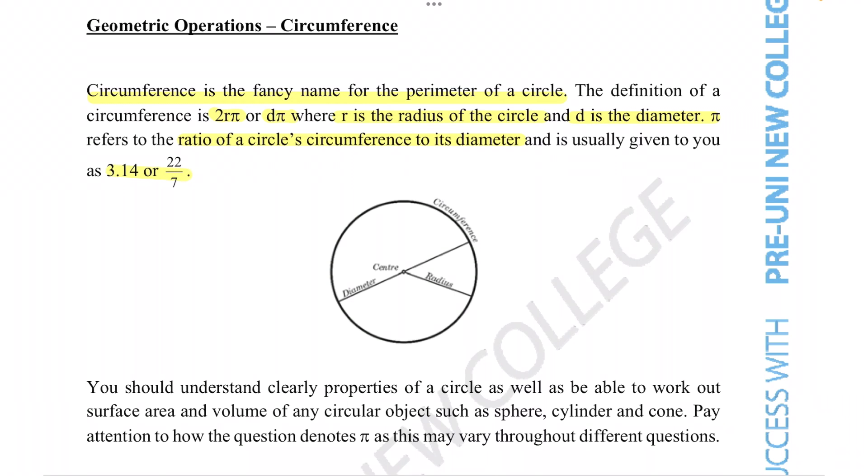We need to understand clearly the properties of a circle as well as being able to work out surface area and volume of any circular object such as the sphere, cylinder or cone. Pay attention to how the question denotes pi as this may vary throughout different questions.